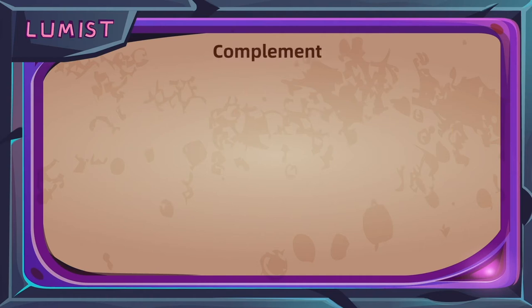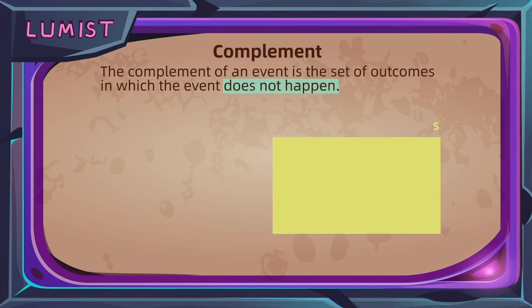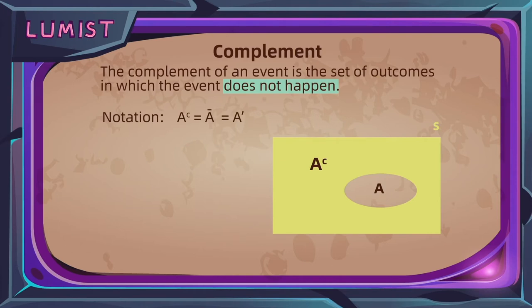Lastly, we have the complement, which is actually easier to understand. The complement of an event refers to all the outcomes under which this event does not happen. On the Venn diagram, it simply means the part outside the circle. We denote this as a superscript C, which stands for complement. Some professors and textbooks may also use the notation of a bar or a prime to denote the complement of an event A.